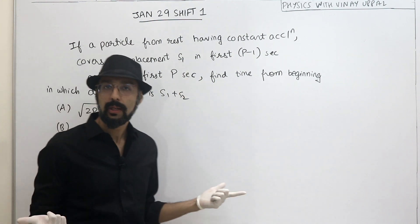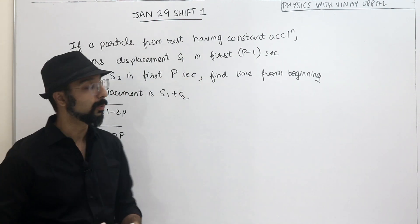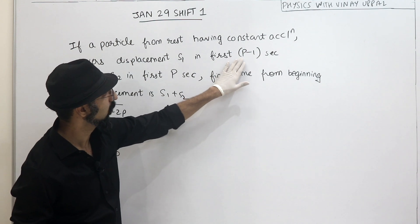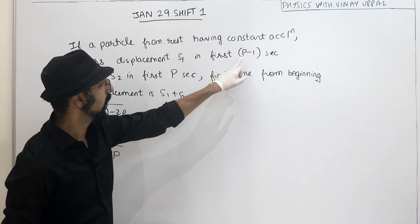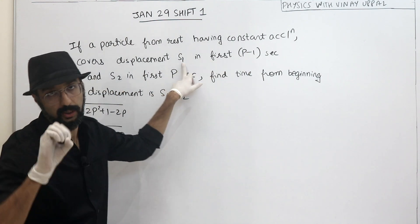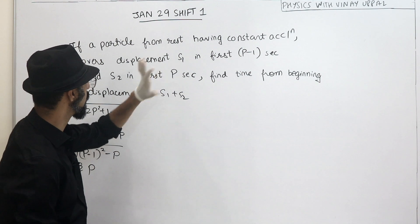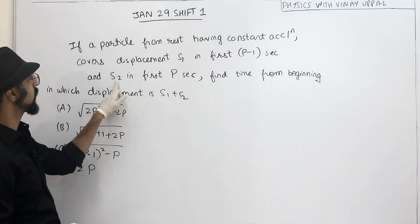We have taken a special value, that was cheat code number 1 that I had taught you. So first, if I take a good value of p-1, how much will the displacement in first p-1 seconds? Zero starting position, 0 seconds, 0 displacement. So s1 value is 0 and first 1 second displacement is s2.